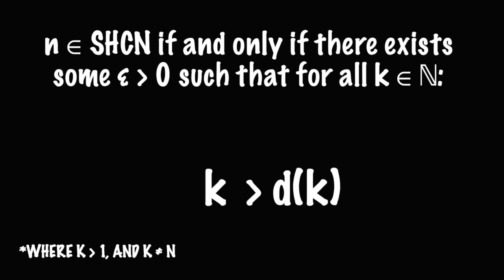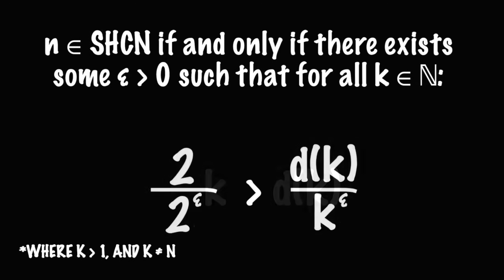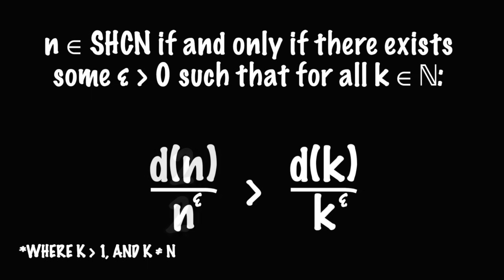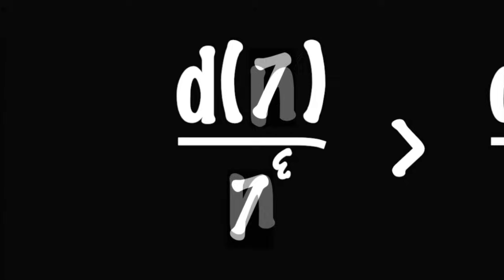So we have indeed confirmed that 2 is a superior highly composite number, which is a little bit weird to say since 2 is also a prime number, but it fits this definition as well and is considered a superior highly composite. Now if you want to prove that a number is not superior highly composite, that's also fairly straightforward.